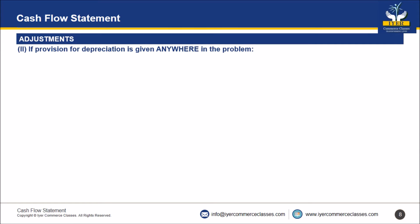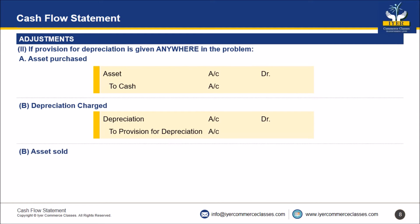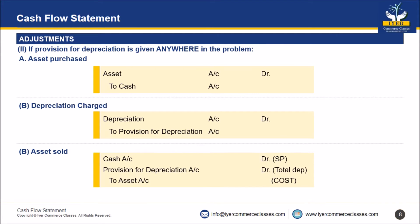If provision for depreciation is given anywhere in the problem, the journal entries will change. For asset purchased: asset account debit to cash account. For depreciation charged: depreciation account debit to provision for depreciation account. For asset sold: cash account debit with the selling price, provision for depreciation account debit with the total depreciation, to asset account with the cost. Any difference should be transferred to profit and loss account.